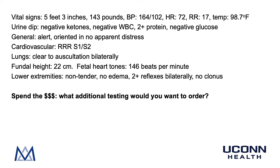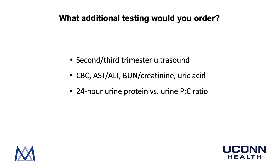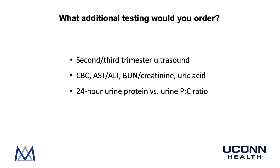Now is the time to spend your money — what additional testing would you want to order? The additional testing would include a second and third trimester ultrasound, as this patient's fundal height is severely lagging behind her gestational age and we want to check fetal growth and amniotic fluid. In terms of lab work, we would want a CBC, AST and ALT, BUN and creatinine, and uric acid. Finally, the patient would be sent to collect a 24-hour urine protein, or you could have a urine protein-to-creatinine ratio performed on a small sample of urine today.